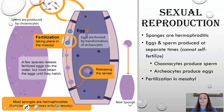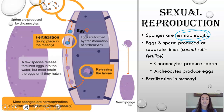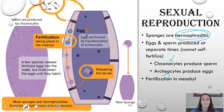Now let's talk about sexual reproduction. Sponges are hermaphroditic, meaning they have both male and female reproductive organs. They can make both egg and sperm, but they don't self-fertilize, because the egg is produced at a different time than the sperm cells, and different cells produce them. The choanocytes produce sperm, and something called an archaeocyte produces eggs. The fertilization itself takes place in the mesohyl — you can see in the diagram the egg being formed and sperm coming from another sponge, entering through the porocyte and ending up in the mesohyl where fertilization occurs.